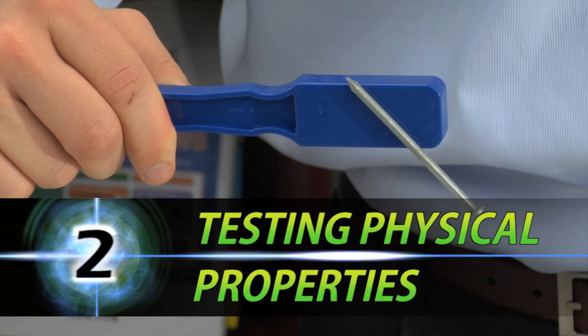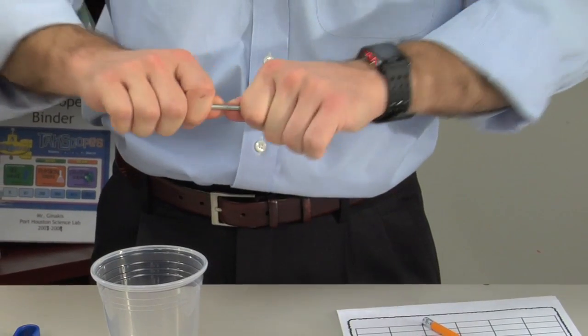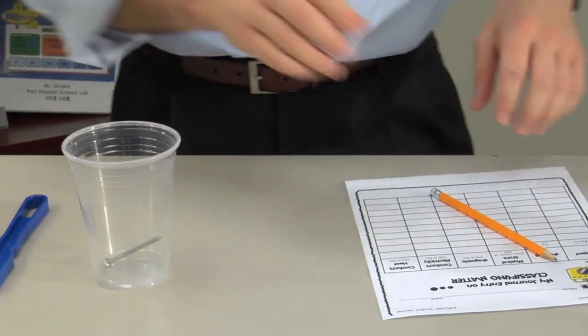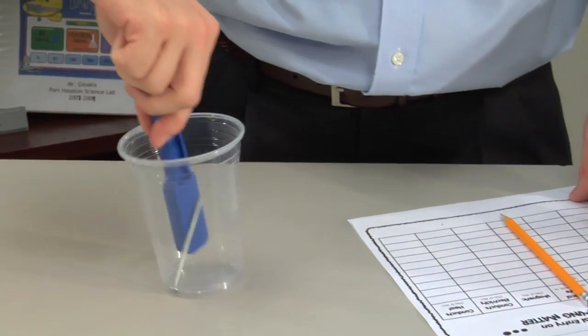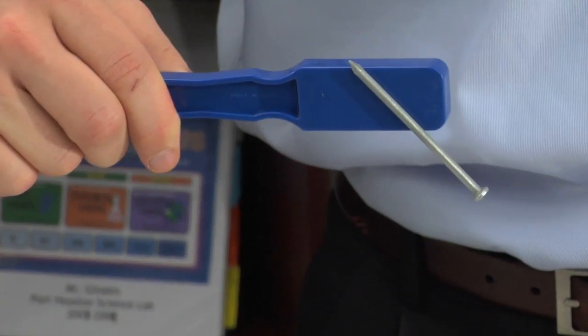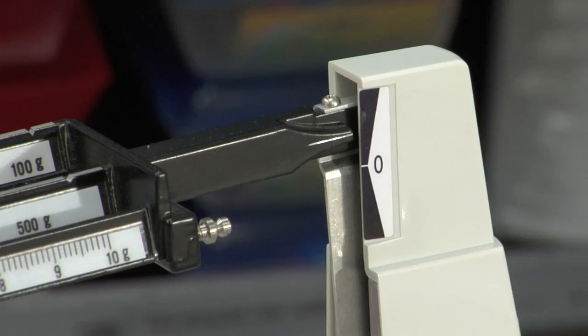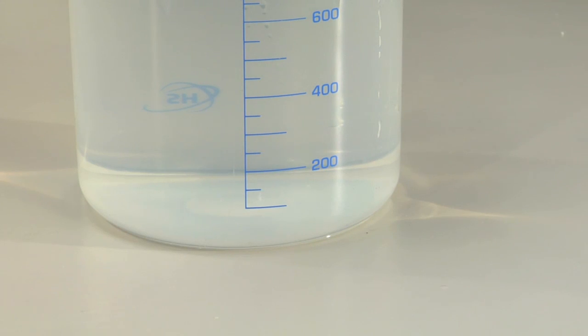Testing Physical Properties. Begin by testing the object's physical state and record its characteristics. Now determine whether or not the object is magnetic. What is its mass? And is it soluble in water?